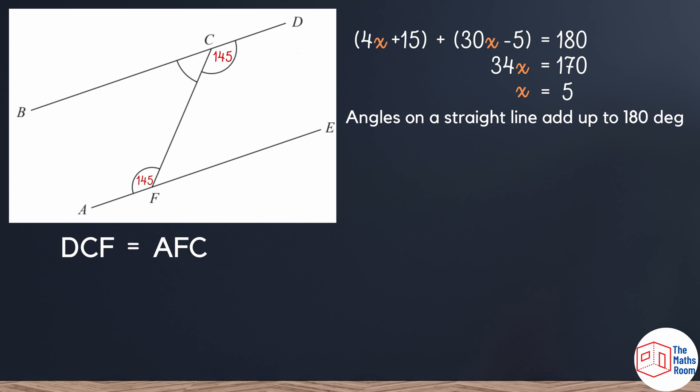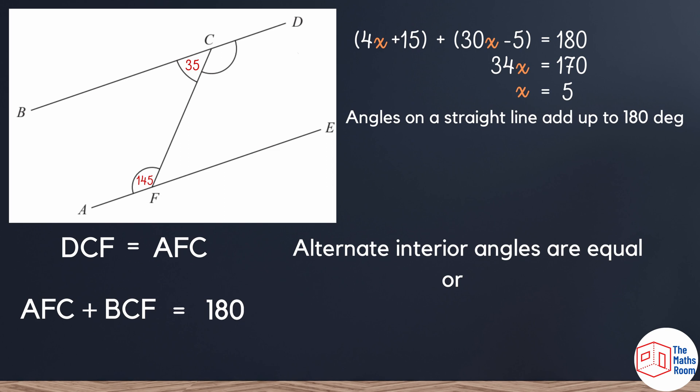As before, we do need reasons. So we'll say DCF is equal to AFC. Now both equal to 145 degrees. Alternate angles are equal. Or we can go down the route AFC plus BCF should equal to 180. And it does for the reason co-interior angles add up to 180 degrees.